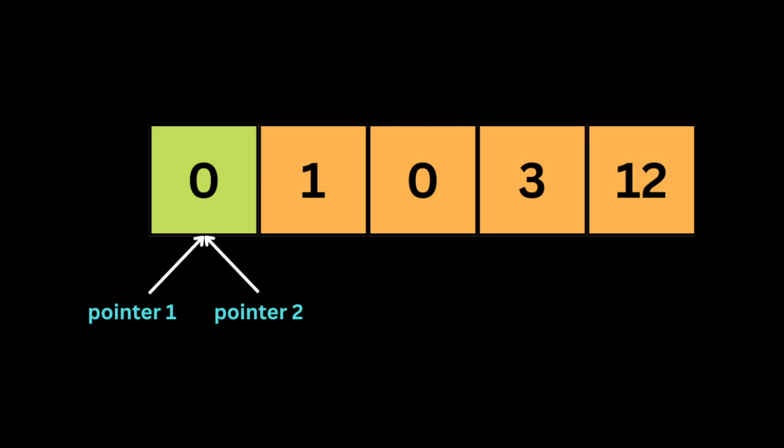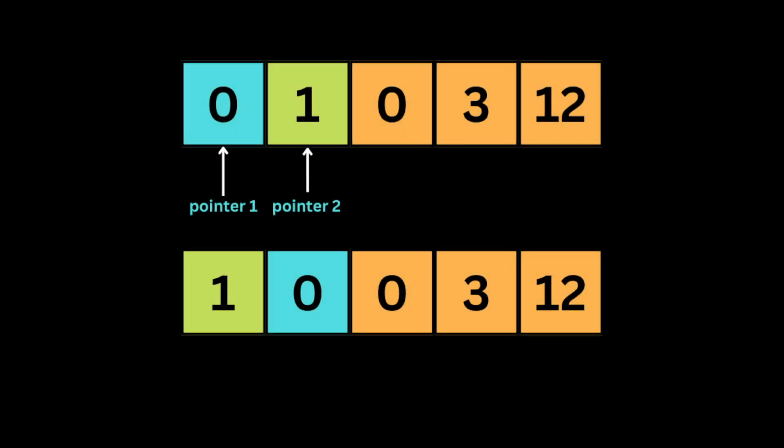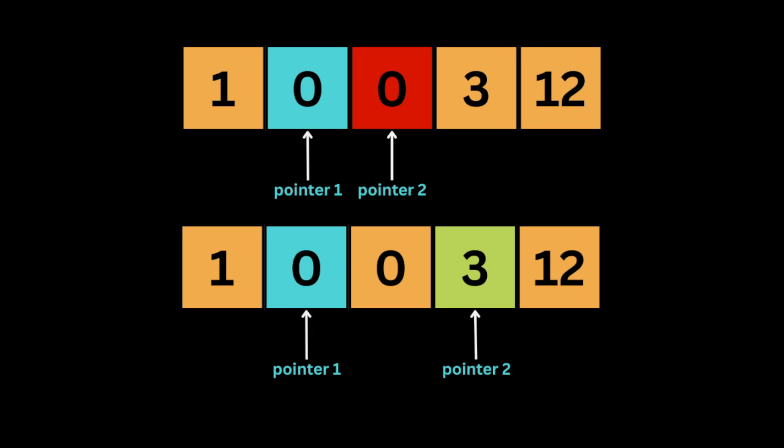Let's say we have this example array of integers. We initialize two pointers — both starting at index zero. Then we loop through the array using the second pointer. The second integer is not zero, so we swap it with the first element using the two pointer indices, then we move both pointers one position forward.